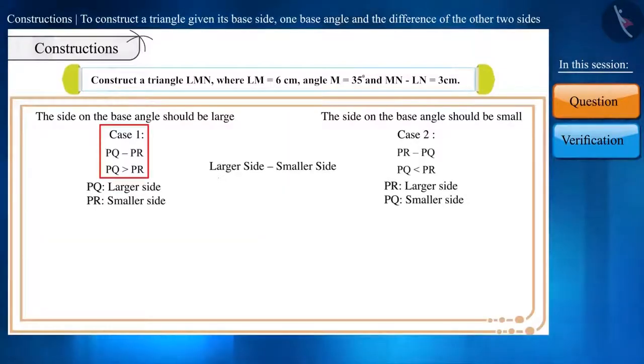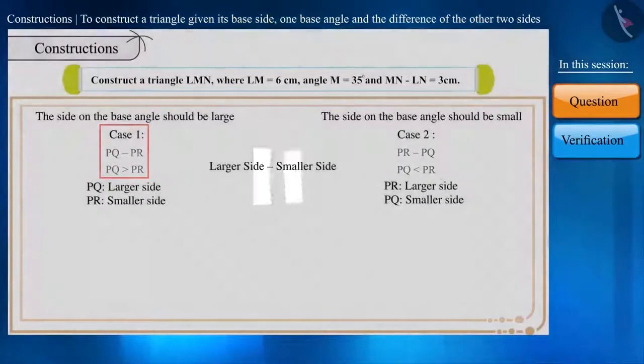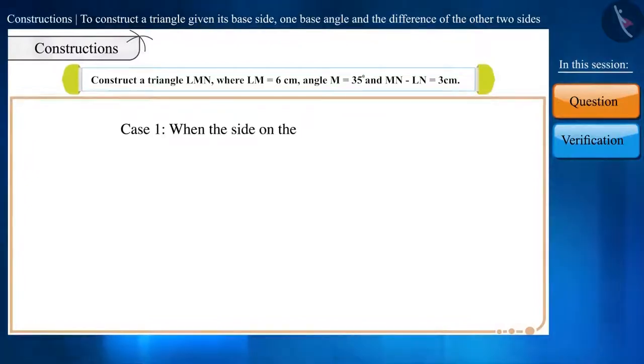Friends, can you tell why we will do the construction of this triangle according to case 1? Case 1 says that the side on the base angle should be greater than the other side. In this question, the measure of MN minus LN is given to be 3 cm.